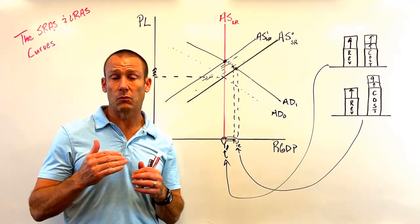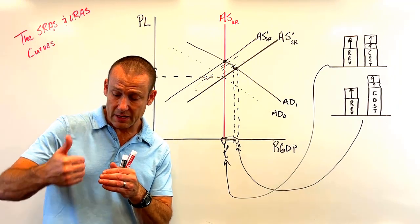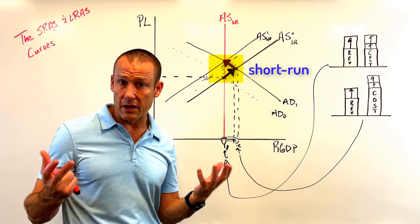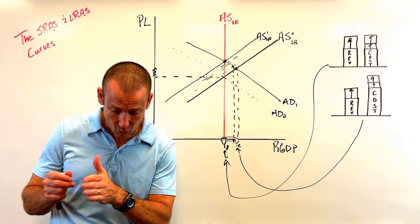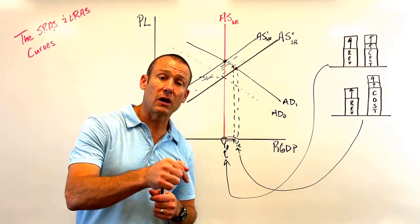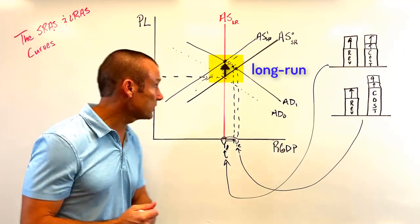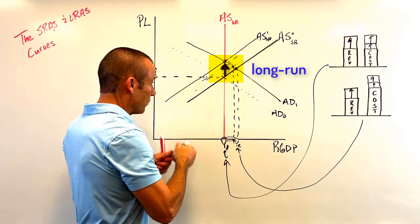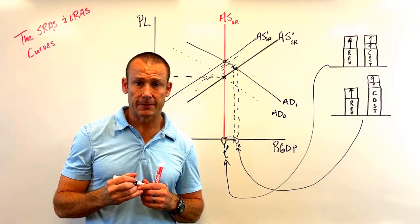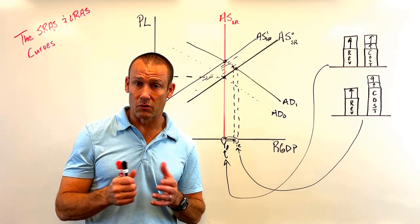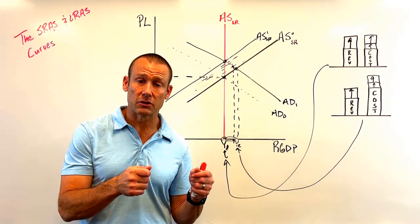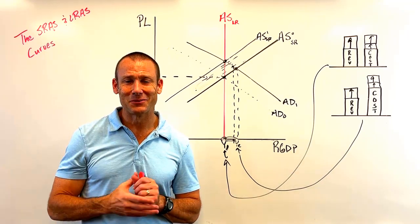They're both total production lines. One shows us what's happening to total production in the near term — I like to say it's showing each domino fall. That's our ASSR or SRAS curve. The other curve is not showing us the whole process of dominoes falling — it's just going to cut from the beginning to the end. Once all the dominoes have fallen, once costs have fully adjusted to the changes in the price level, what's going to happen to total production? The answer is nothing. We were producing this amount; we now are producing this amount once costs have fully adjusted. Hope that made sense — we'll see you in the next video.